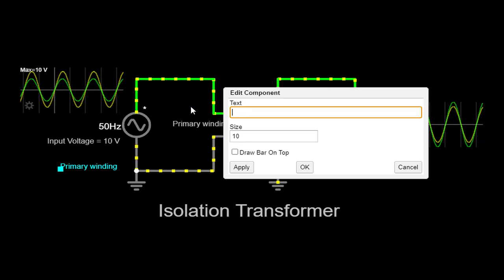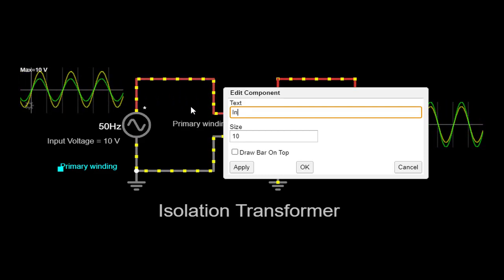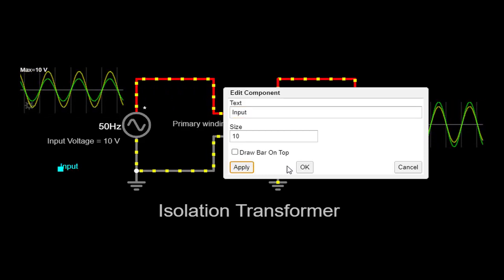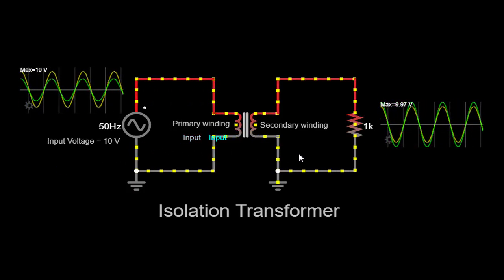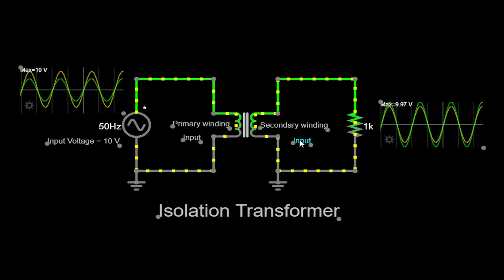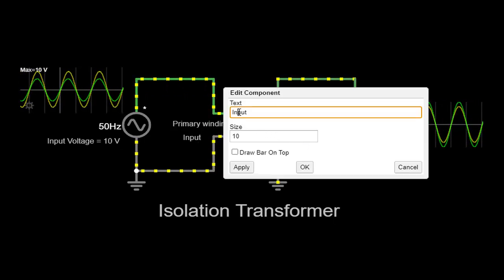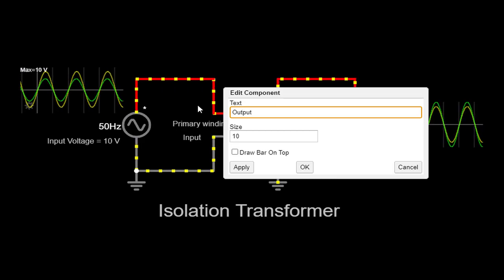The primary winding receives the input voltage, and the secondary winding delivers the output voltage. The key aspect of an isolation transformer is that it prevents any direct electrical connection between the input and output sides, ensuring safety and protection against electrical hazards.